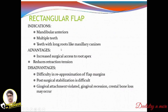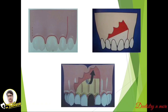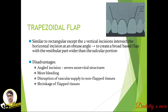The rectangular flap is indicated in mandibular anteriors and for multiple teeth or teeth with long roots like the maxillary canine. It provides increased surgical access to the root apex and reduced retraction tension. Problems include difficulty in re-approximation, difficult post-surgical stabilization, gingival attachment violation, chances of gingival recession, and possible crestal bone loss. Unlike the triangular flap which is released only on one side, the rectangular flap has vertical incisions on both sides.